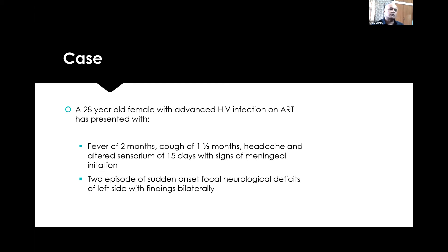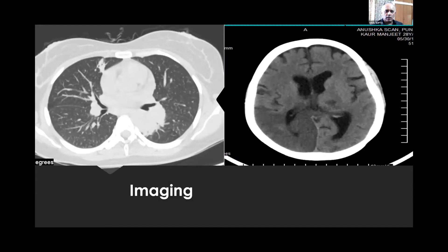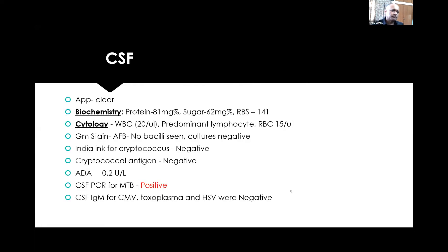She also gave history of two very recent episodes of sudden onset focal neurological deficits of the left side, with findings that were actually bilateral. The imaging findings show that the chest CT reveals an area of infective focus probably suggestive of tuberculosis. The NCCT brain shows a fresh infarct in the PCA territory, some old infarcts in the thalamus and in the MCA territory. The CSF was suggestive of chronic meningitis and PCR for Mycobacterium tuberculosis was positive — a very typical presentation of chronic meningitis with infarcts.